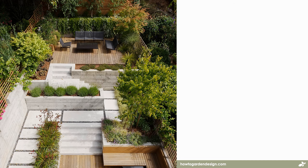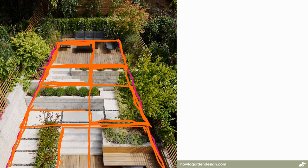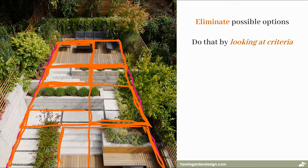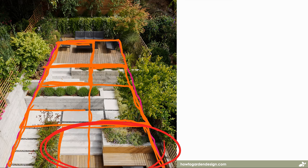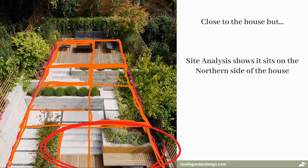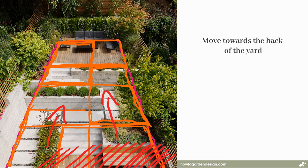So, we're going to pretend this example began as a simple, flat backyard. When we look at the yard itself, there are plenty of positions we could place an informal entertaining space. We want to eliminate some of our possible options by looking at our criteria — seeing when and how we want to use the space — and then removing positions that don't tick those boxes. A simple example: this area at the bottom is closer to the house, which is good, but from some site analysis we know it sits on the northern side of the house and the house is quite tall. This means placing the space here will put it in a lot of shade, even in summer. Given we want the space to experience some sunlight, these positions won't do. Our solution is to move the area towards the back of the yard.